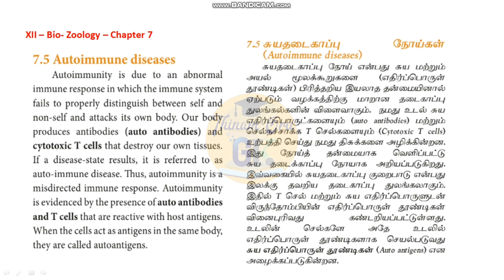There are two types of autoimmune diseases: organ-specific (affecting a specific organ) and systemic. An example of an autoimmune disease is Rheumatoid Arthritis.